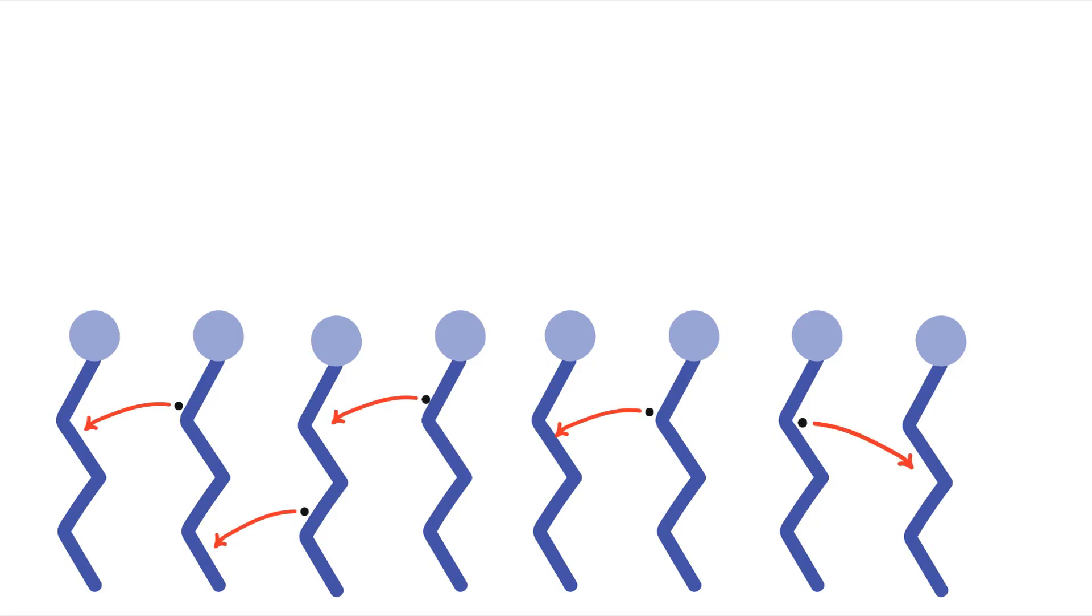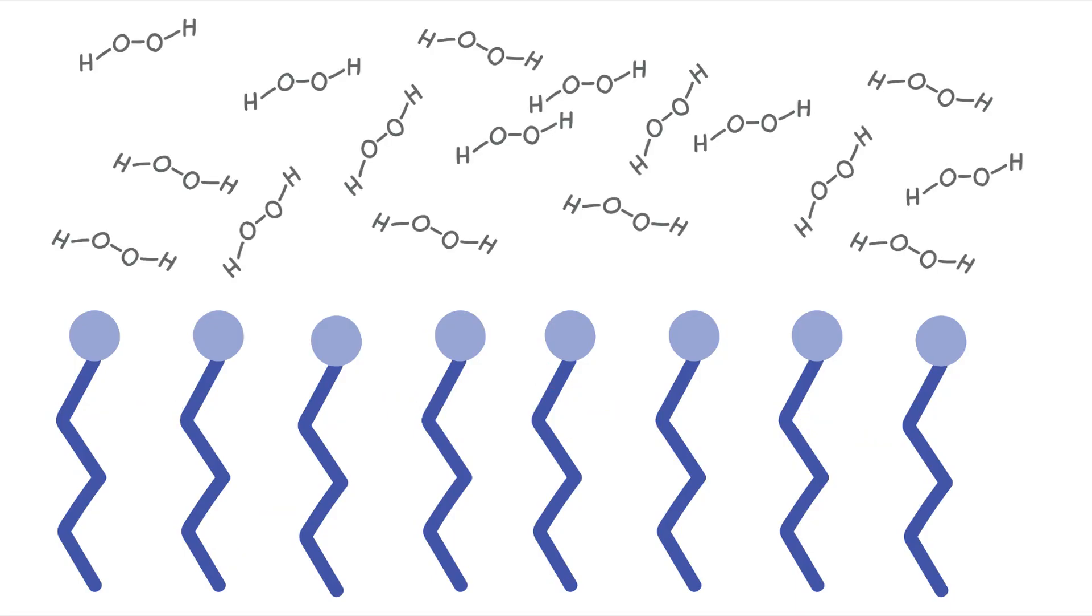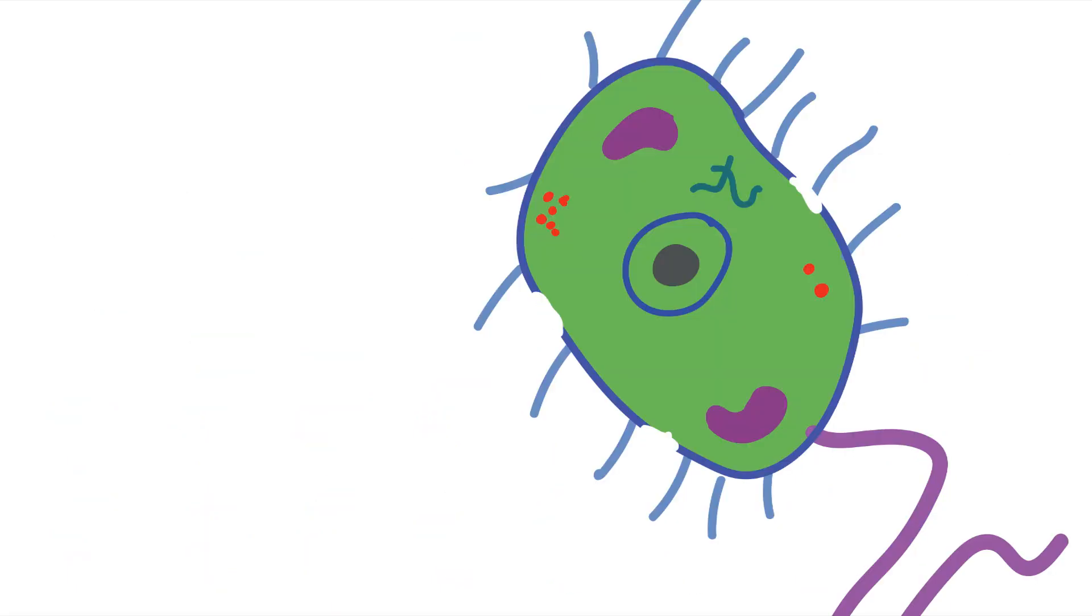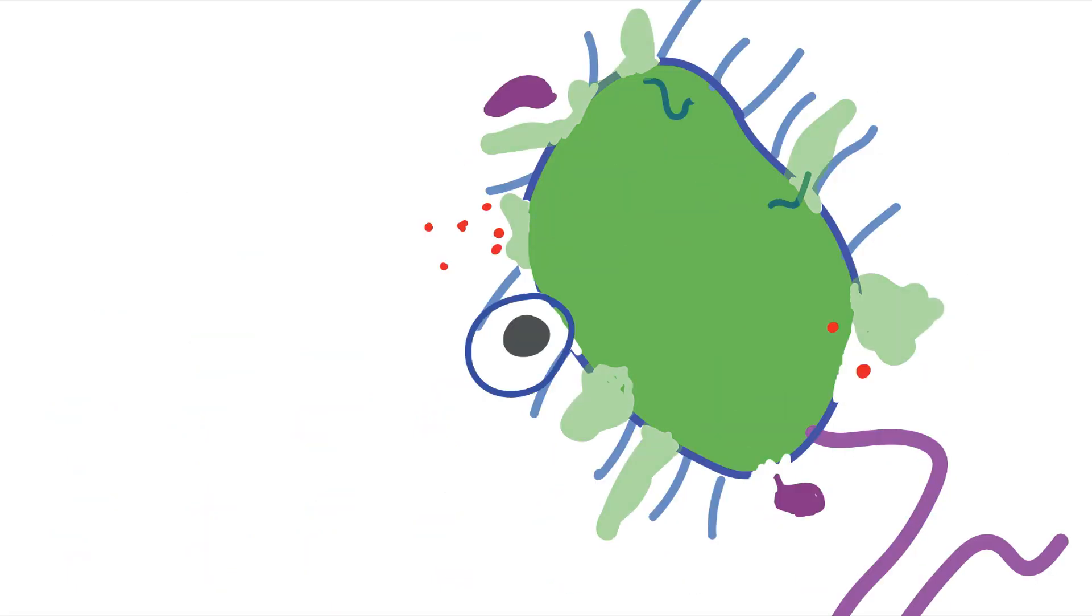As you can imagine, this creates a very destructive chain reaction. Now, just add a ton more hydrogen peroxide, and the entire membrane would become dismantled, causing cytoplasm and organelles to break apart and leak from the bacteria.